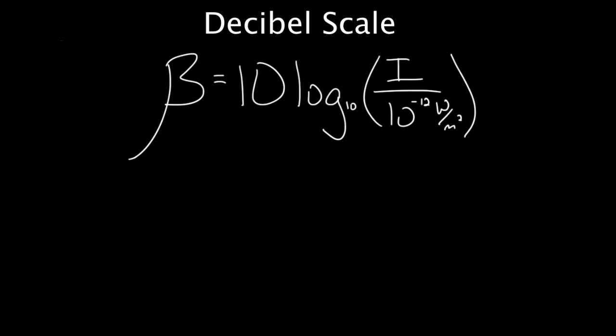This looks intimidating. Let's talk about it and break it down. Beta is the number of decibels. So this side gives you the number of decibels and we abbreviate decibel with a little d, capital B.